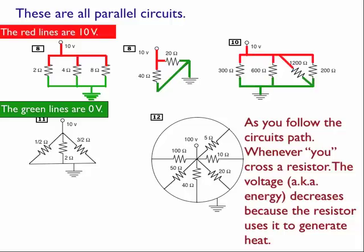So the 300, the 600, the 1200, and the 200 are all in parallel. And in number 11, they're also all in parallel. And finally, on number 12, it's 100 volts. And it starts off at 100, and on the other side it goes to 0. So all six of those resistors are in parallel with each other.